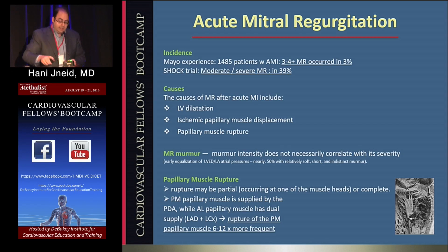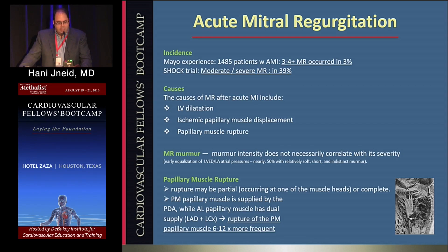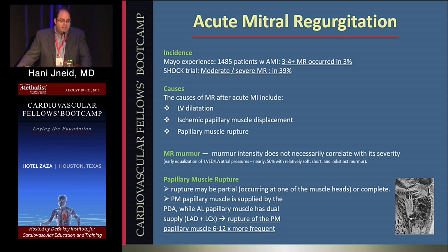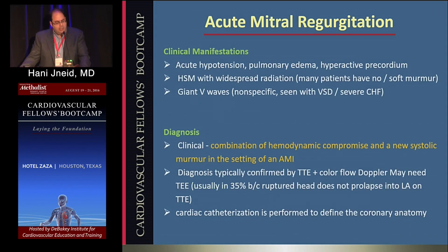The third mechanical complication is acute mitral regurgitation. Moderate or severe MR can occur in up to 3% of all acute MI patients, predominantly related to LV dilatation. However, when related to ischemic papillary muscle displacement or papillary muscle rupture, this is truly a mechanical complication. In the SHOCK trial, almost 40% of patients had moderate or severe MR. The murmur does not necessarily correlate with severity because if there is equalization between LVEDP and left atrial pressure — in 50% of cases — you may not hear a murmur. The posterior medial papillary muscle is most prone to rupture due to its single blood supply.